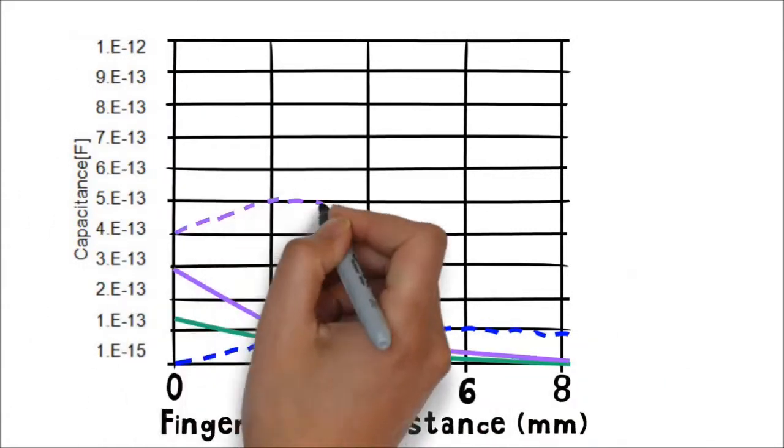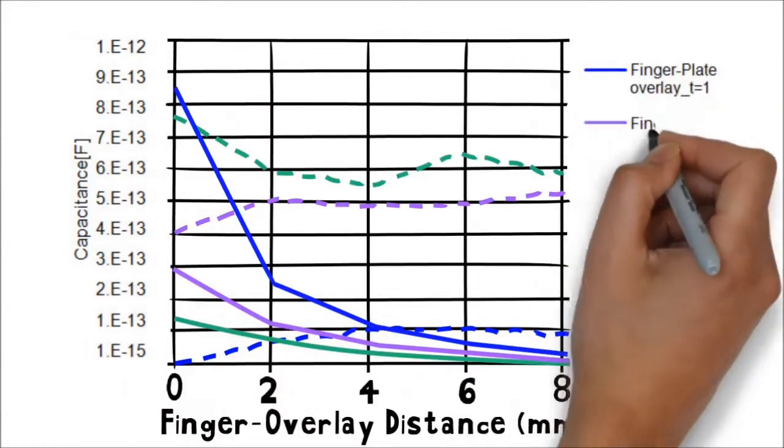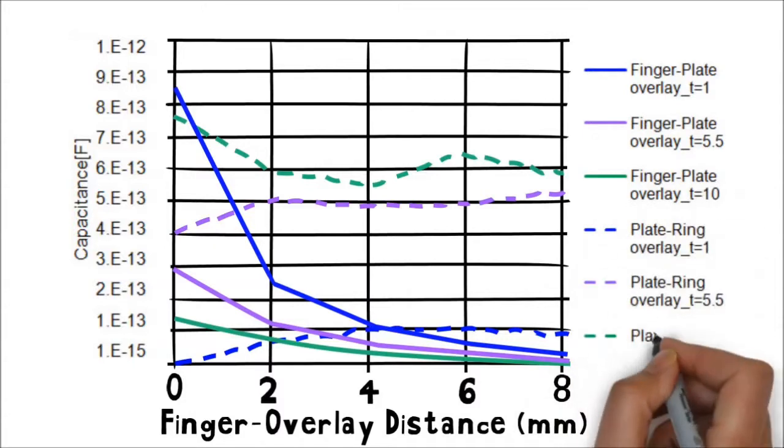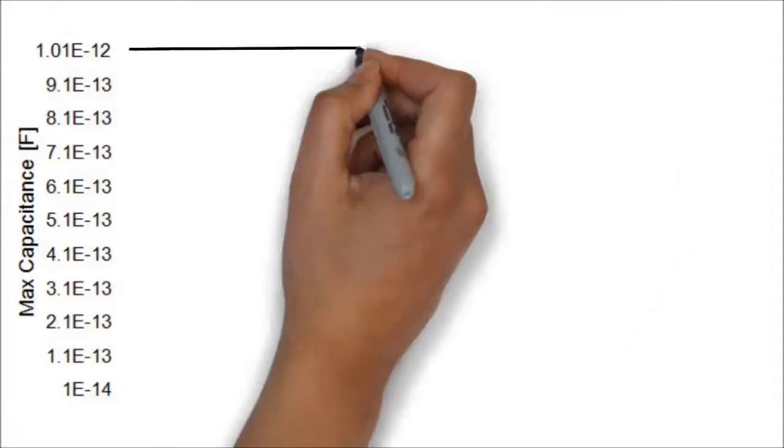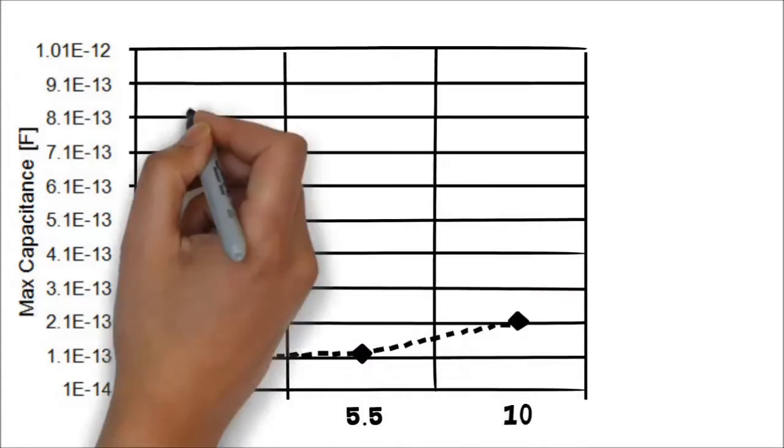The solid curves show the capacitance between the finger and the sensor pad, and the dash curves show the capacitance between the pad and the surrounding metal ring. Based on these simulations, for a passive liquid crystal display, the self-capacitance measurement method is the most suitable technology to sense through thick overlay plastics.